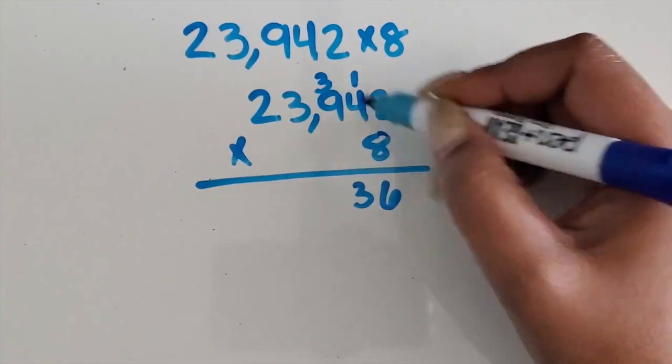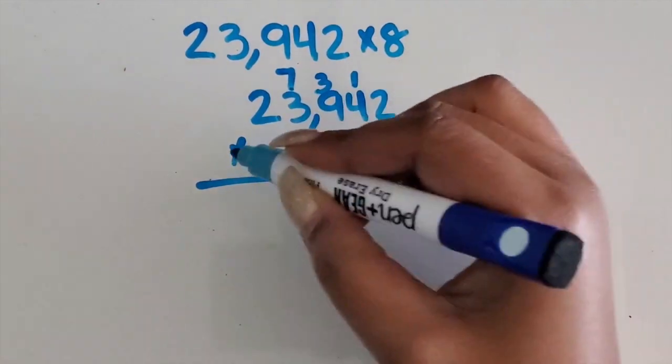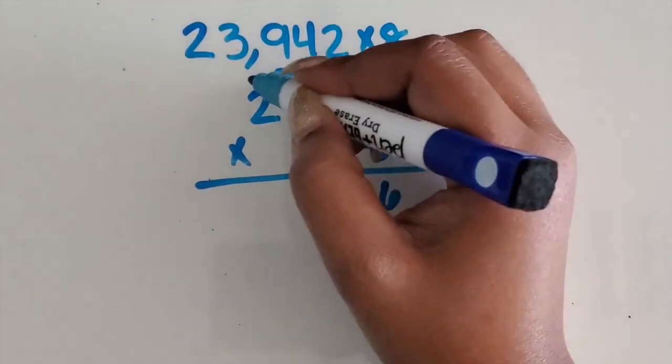8 times 9 is 72 plus 3 is 75, regroup that seven. 8 times 3 is 24 plus 7 is 31, regroup the three.